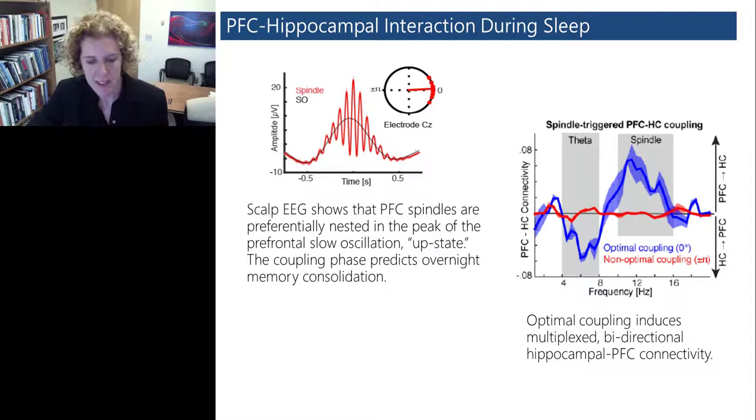On the right, this is showing that optimal coupling actually induces a multiplexed bidirectional hippocampal prefrontal cortex connectivity. The blue line represents the optimal coupling between the spindle and the slow oscillation. These data suggest that when this optimal coupling is associated with theta frequency, this is related to stronger connectivity from going from the hippocampus to the prefrontal cortex. During the spindle frequency, it's associated with stronger connectivity from the prefrontal cortex to the hippocampus.